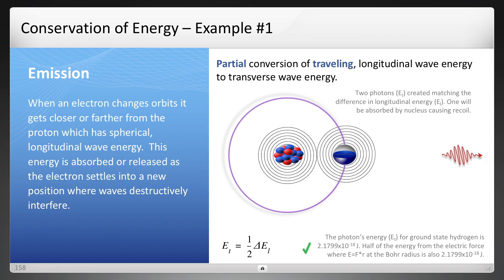To prove that it is half the longitudinal energy for hydrogen, the photon's energy is the Rydberg unit of energy, which is that number you see there, 2.1799 times 10 to the minus 18 joules.